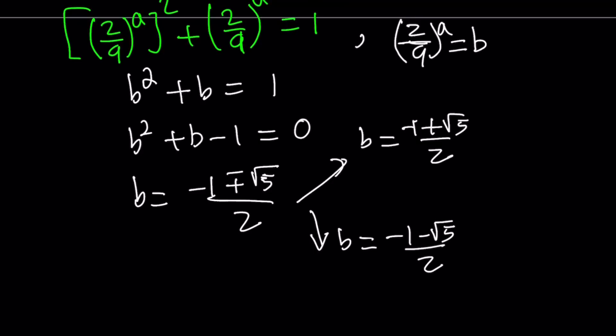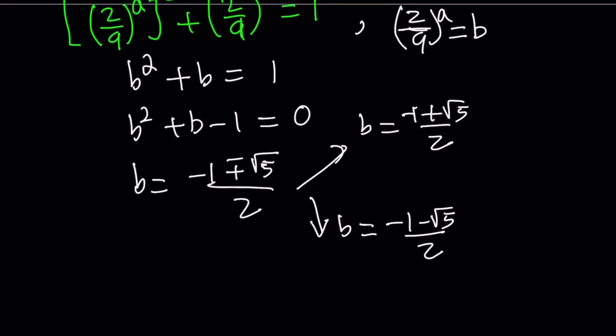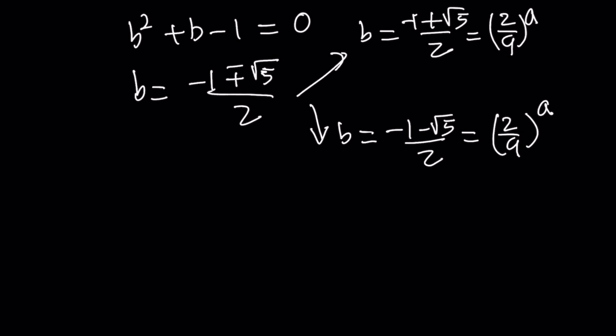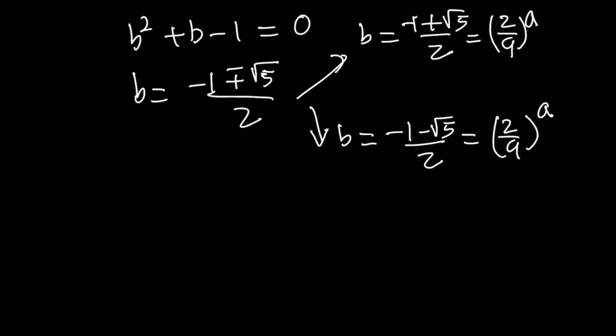So here's the interesting part. b is something to the power a, and the base is positive. When the base is negative, we run into problems. So we can write this as 2 over 9 to the power a. From here we can find the a values, but 2 over 9 to the power a cannot equal negative 1 minus root 5 over 2, because this is negative. And 2 ninths is positive, therefore it can't have a negative power. So we're going to discard this solution. The second one is invalid.